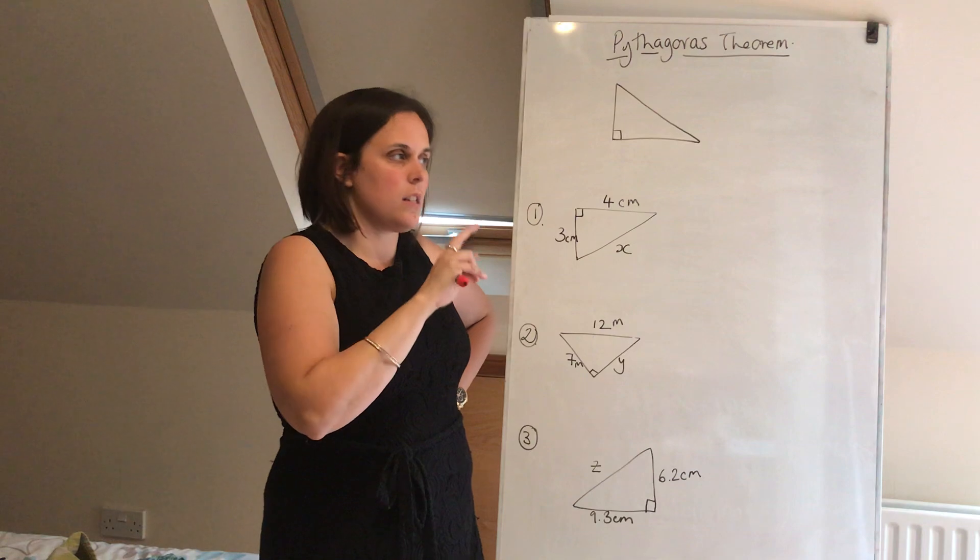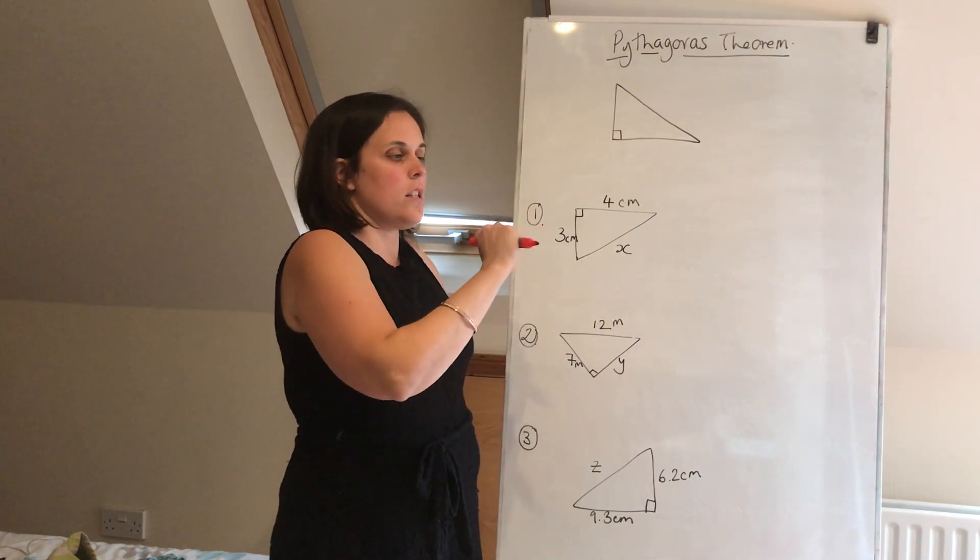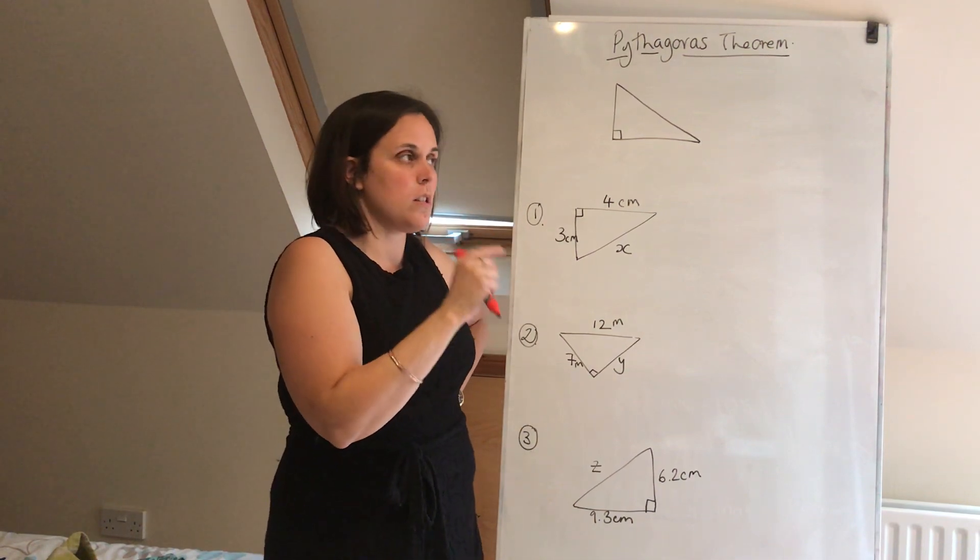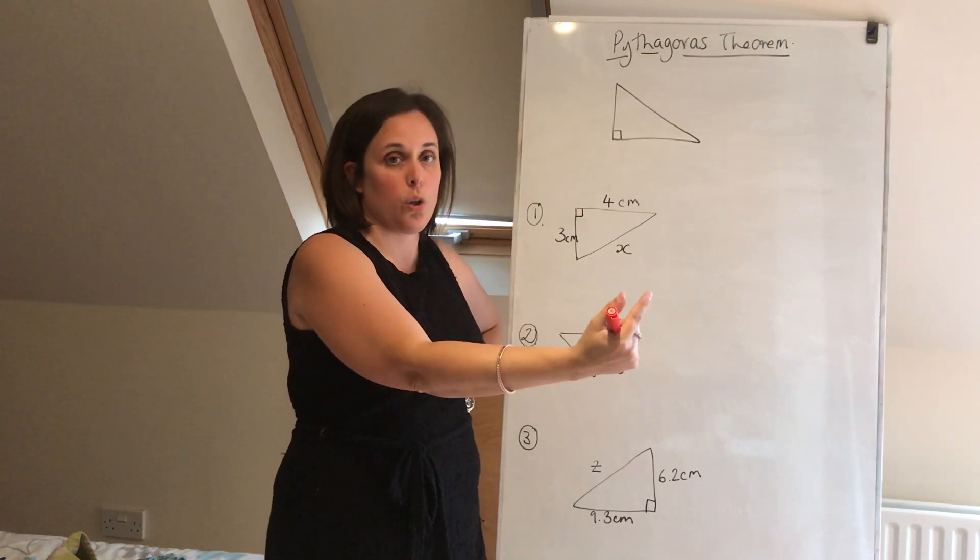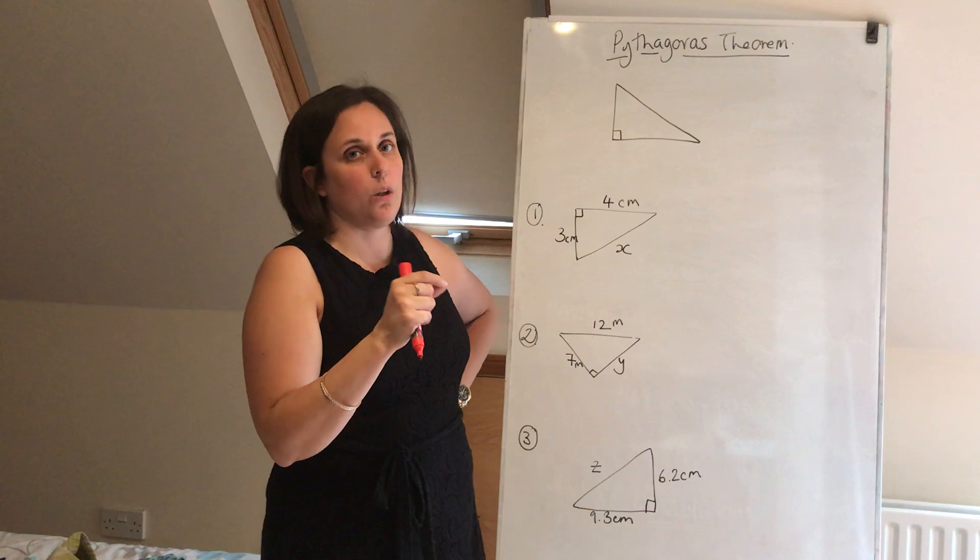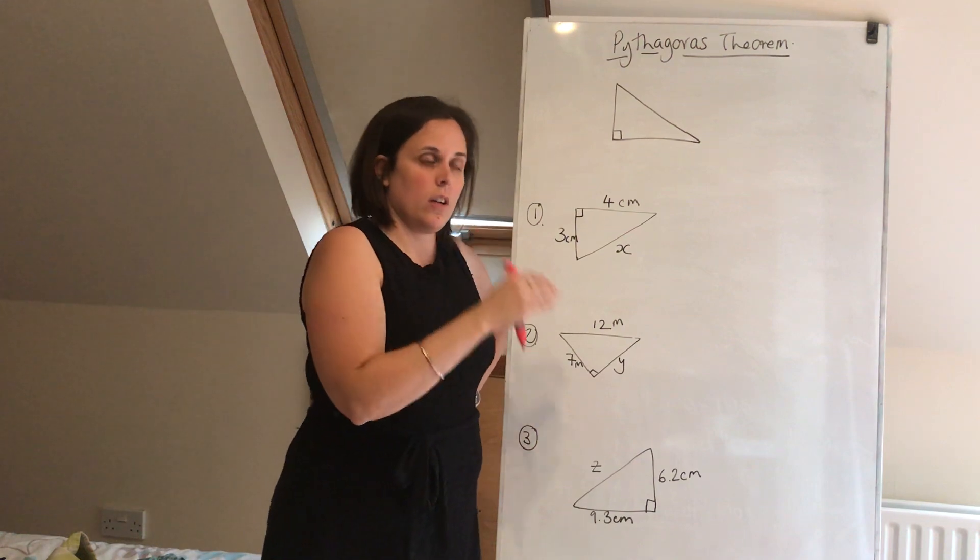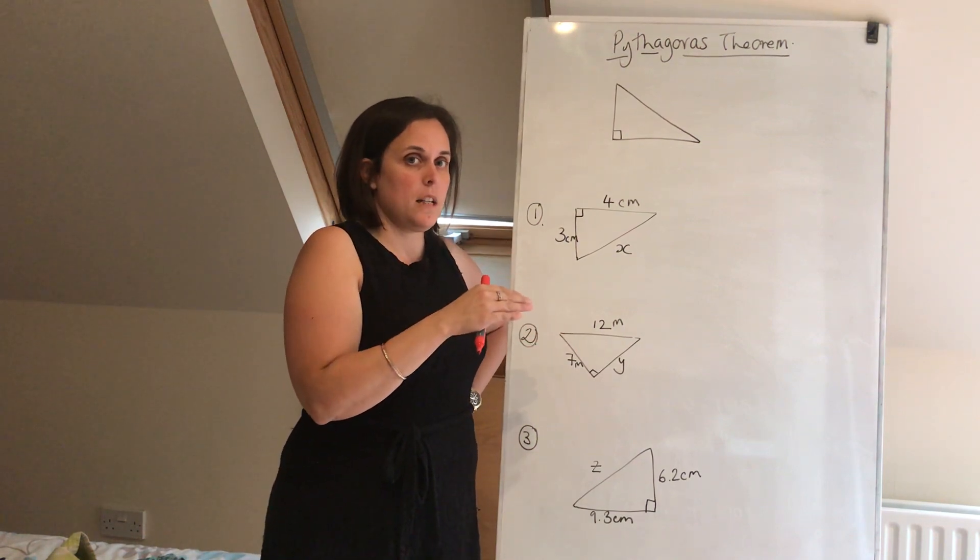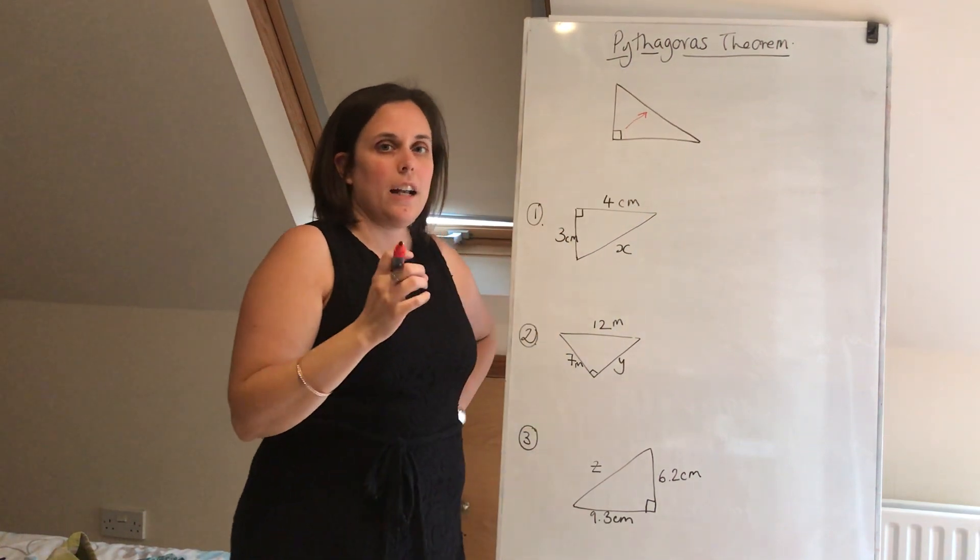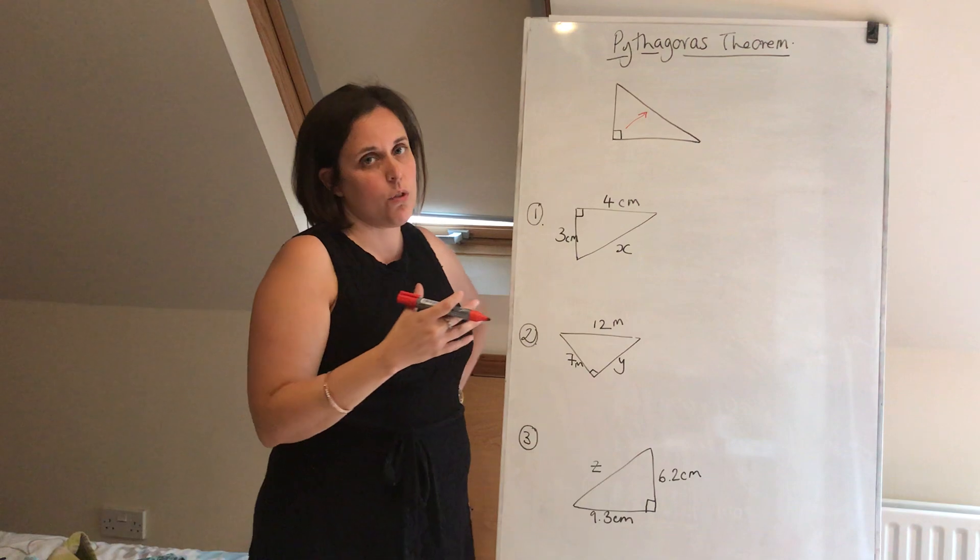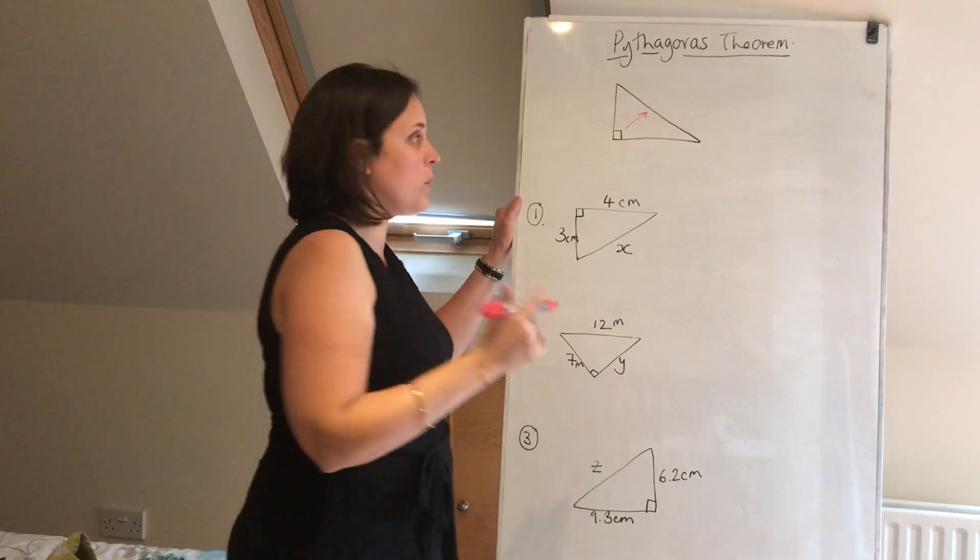Now like I said, in any triangle, the sides and the angles have a relationship, and that relationship is that the sides are in proportion to the angles. So the biggest angle in the triangle has the longest side opposite. The smallest angle in a triangle has the shortest side opposite it. So if you've got a right angled triangle, the 90 degree angle is always the biggest angle, and therefore the side opposite is always the longest side. And because that's always the case, we give that side a name, and that name is hypotenuse.